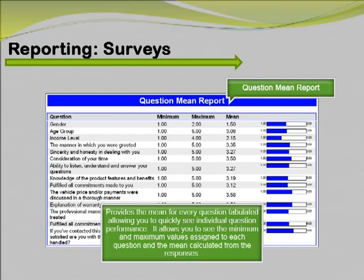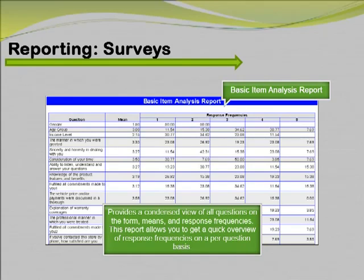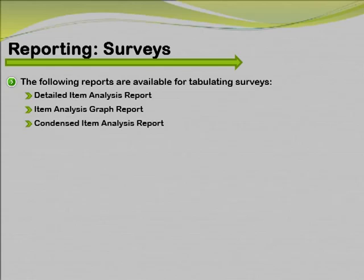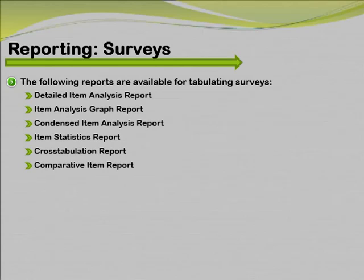In addition to test grading, Remark QuickStats can also be used to tabulate and analyze surveys. Two new survey reports were added to version 8. The question mean report provides the mean for every question tabulated, allowing you to quickly see individual question performance. It displays each question that was tabulated, along with the minimum and maximum values assigned, and the mean calculated from the responses. You can also display a bar chart of the mean. The last new report in Remark Office OMR 8 is the basic item analysis report, which provides a condensed view of all the questions on the form and response frequencies. The following reports are also available for tabulating surveys: the detailed item analysis report, item analysis graph report, and condensed item analysis report provide answer choice frequency on a question-by-question basis, similarly to the same reports available for test grading.